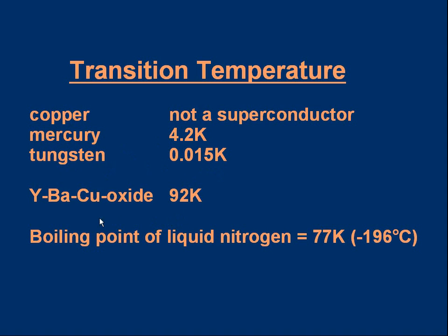You can make superconductors from complex materials. Here's one — yttrium barium copper oxide, sometimes called YBCO. Its transition temperature is relatively high at 92 K, but that's still very cold. Materials like this are often referred to as high temperature superconductors because the transition temperatures are relatively high compared to some of the other things we're looking at. It's worth noting that the boiling point of liquid nitrogen is 77 K. It would be very useful to find superconductors with transition temperatures above 77 K, meaning they can be kept superconducting using liquid nitrogen rather than very expensive liquid helium. So researchers look for things with high transition temperatures.